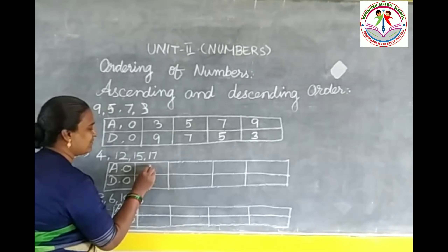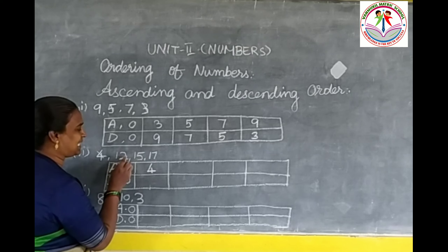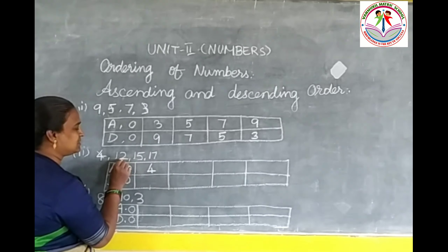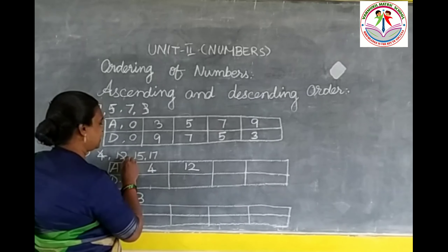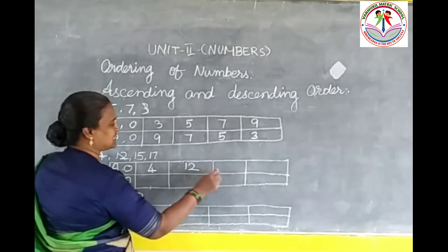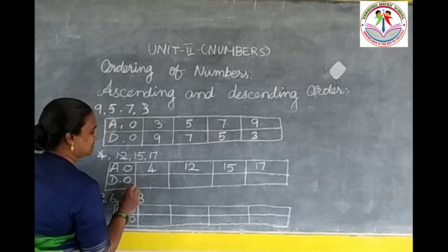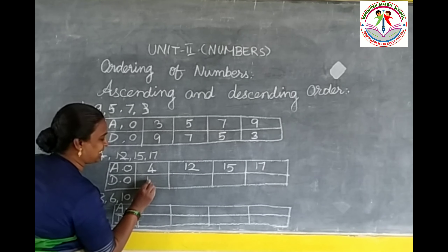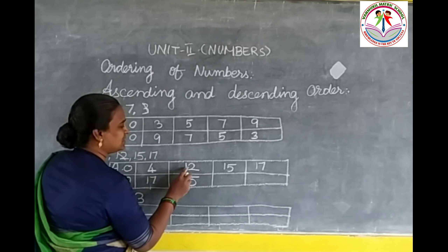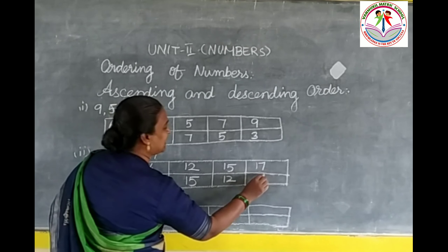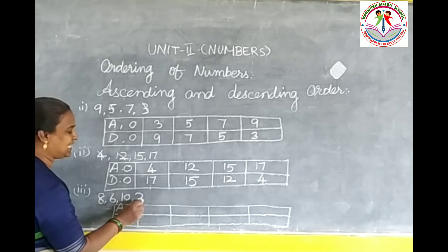Here the numbers are 4, 12, 15, and 17. Which is the smallest number? Very good — 4. Then in the remaining numbers, comparing the tens digits 1, 1, 1 and units digits 2, 5, 7 — so 12 is the next smallest. Then comparing 15 and 17, 15 is smaller, and last is 17, which is the biggest number. So ascending order: 4, 12, 15, 17.